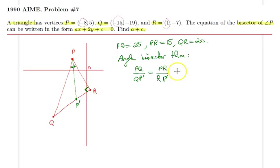PQ to QP prime is equal to PR to RP prime. From that, PQ is 25 to QP prime is equal to PR, we just found out to be 15, over RP prime. Therefore, we have QP prime over RP prime is equal to 5 over 3.